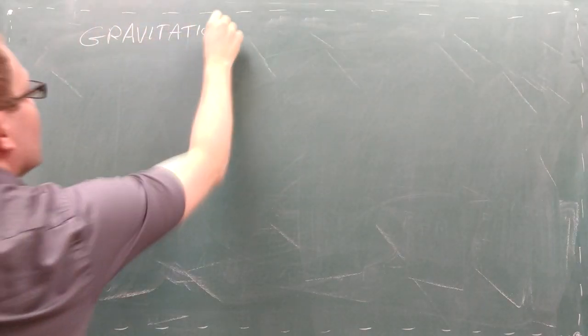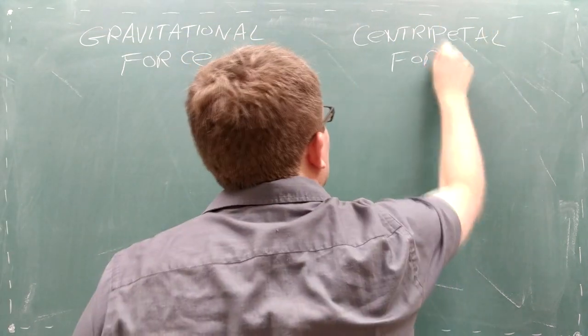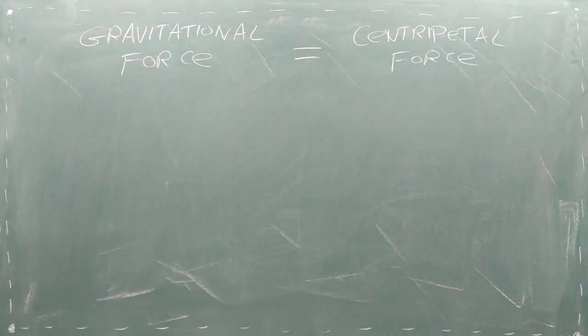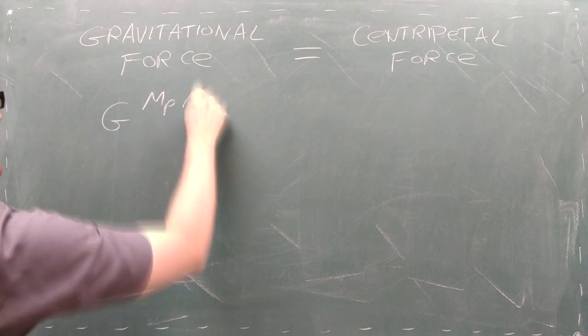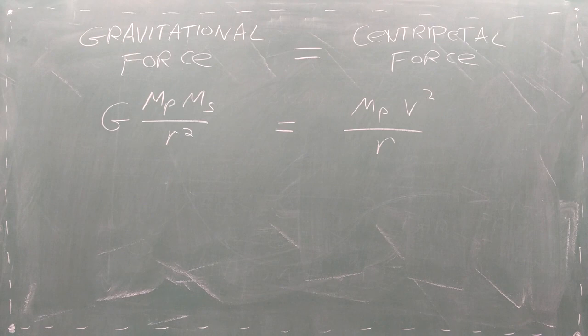Earlier in this series, I commented that changing a planet's mass won't change its orbital pattern. This is because if you set the gravitational force between the planet and the star equal to the centripetal force required to keep the planet in orbit, the mass of the planet cancels.